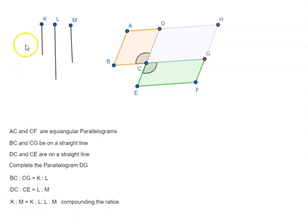So K is to M could be equal to K times L is to L times M. Now in our modern terminology, we are just basically multiplying the numerator by L and denominator by L.